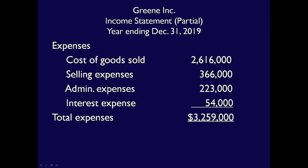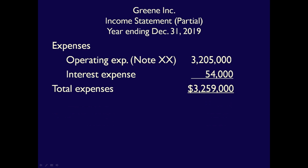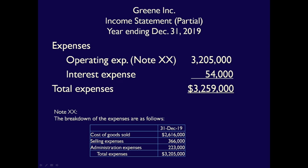However, if a business chose a condensed statement format, they would likely list only two lines on the face of the statement: operating costs of $3,205,000, with a reference to a note, and interest expense of $54,000, because this line must always be shown on the face of the statement. The breakdown of the operating expenses would be provided in the notes to the financial statements, likely in the form of a schedule. If a condensed format is used, information must be provided in the notes to the financial statements.